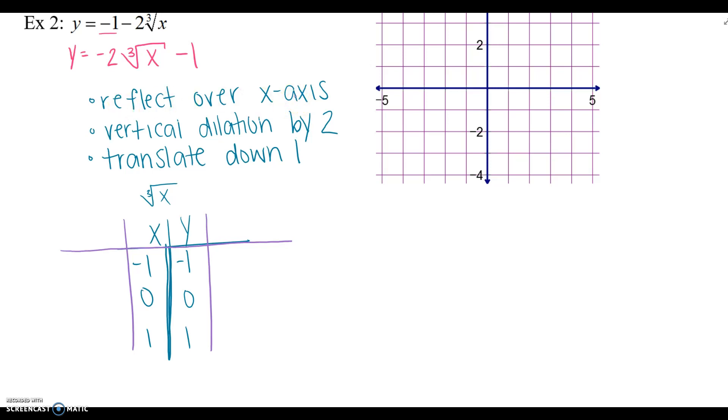So, apply our transformations to the table. So reflect over the x-axis. That's going to make our y values negative. A vertical dilation. That's going to multiply our y values. And then translate down 1. Well, that's going to move our y values. So we're actually not moving the x values at all. So you can either just leave it. Or you can rewrite it again just to kind of help you out. Now let's apply. So, negative 2 times negative 1 minus 1. So I'm just substituting in my y values. It's positive 1. 0 times negative 2 minus 1 is negative 1. And 1 times negative 2 minus 1 is negative 3.